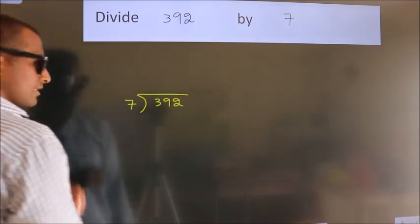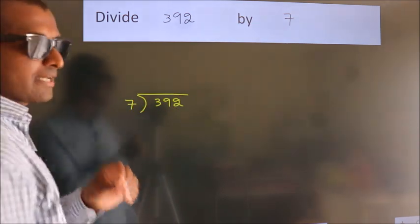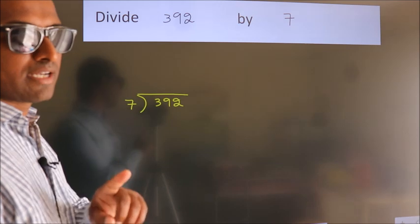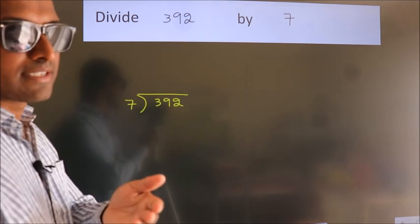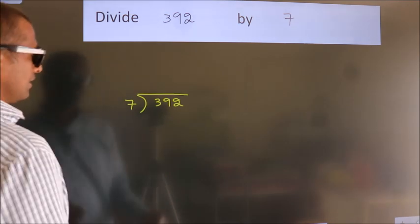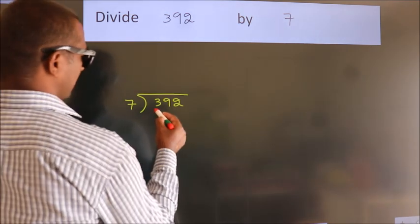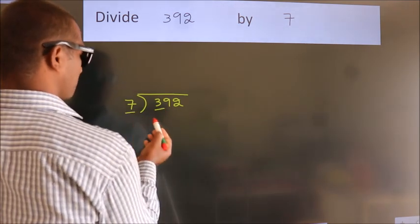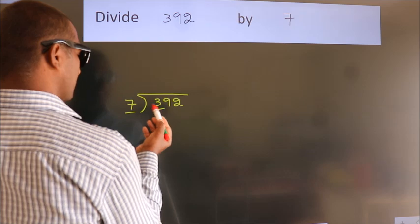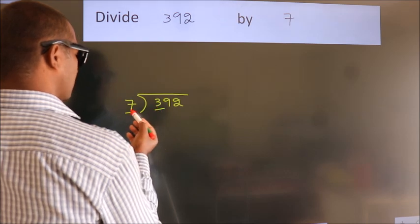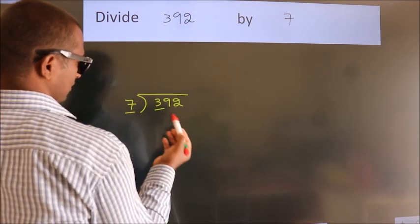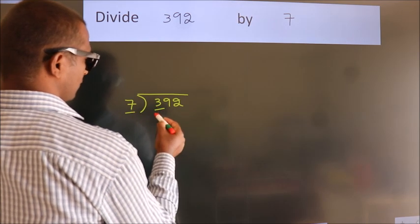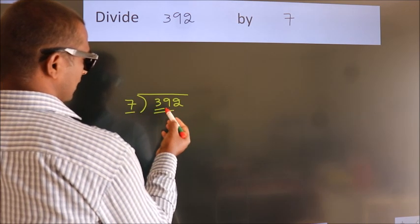This is your step 1. Here we have 3, here 7. 3 is smaller than 7, so we should take 2 numbers: 39.